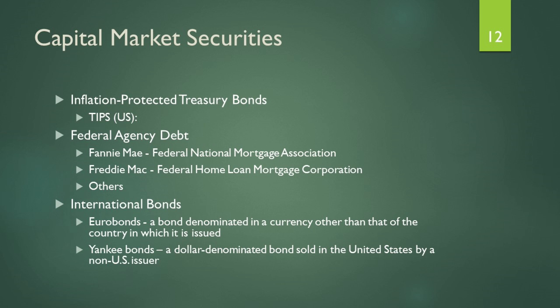Another interesting bond is the Yankee bond. As the name suggests, it is related to the US. It is a dollar-denominated bond sold in the US, but by a non-American issuer. For example, if a Chinese corporation decides to finance their operations by floating a new bond in New York denominated in USD, that would be a Yankee bond.